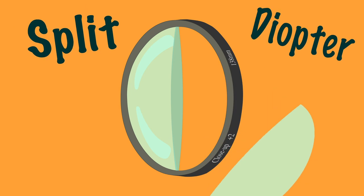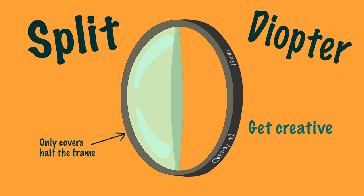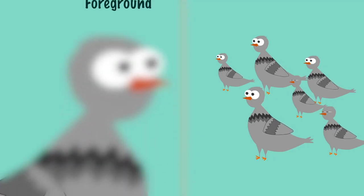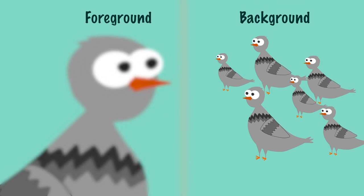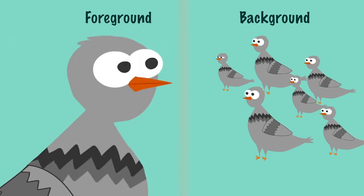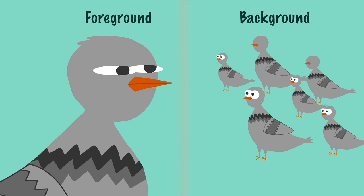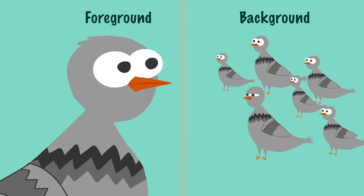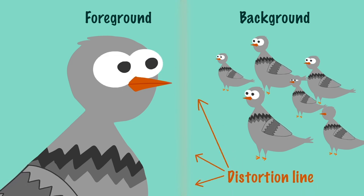You can also get split diopters, where the convex piece of glass only covers half the frame. This is where you can get creative. Someone in the foreground and someone in the background can both appear in focus if positioned correctly. The trick with this is to hide the distortion line in the middle where the glass cuts off, otherwise you end up exposing your technique.